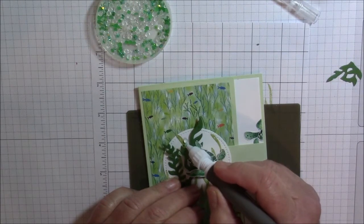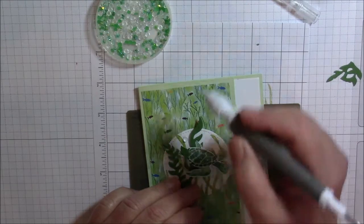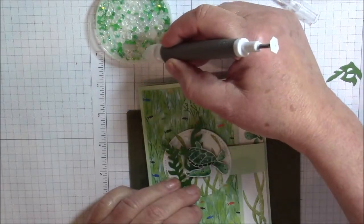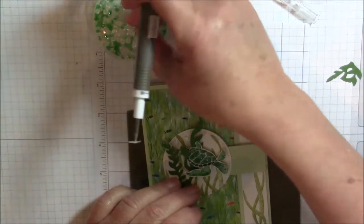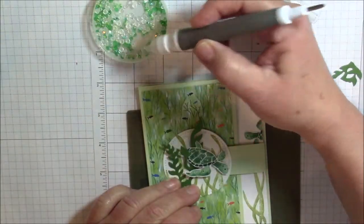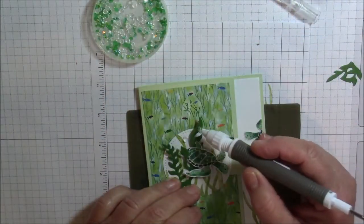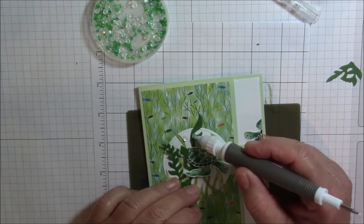I am going to take a clear bubble and place it right there. Those are going to be like little air bubbles, just giving your card some more texture and more interest. You want the flat side down.